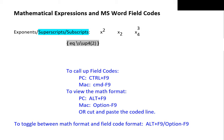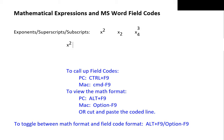We cut the field code and paste. The exponent 2 does not look much like an exponent because we don't have the base for our exponentiation. If it is x squared we want, we type x before the exponent. Of course, we could have typed in x first before starting the exponent field code.